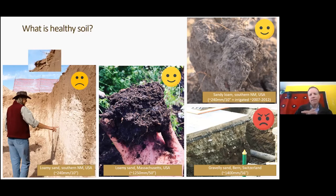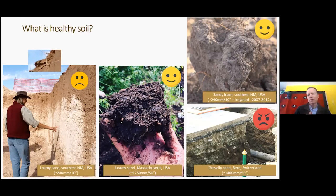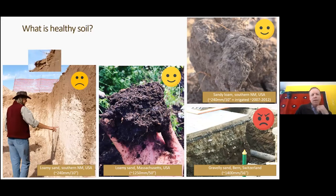Applying soil health indicators to the example images: the center soil is clearly healthy — lots of organic matter, roots not impeded by compaction, and good soil structure, though that could still be improved. This soil was heavily amended with compost over four to five years. It's a coarse sandy soil, and sandy soils are tough to give really good structure, but it's in pretty good shape.